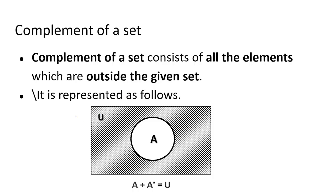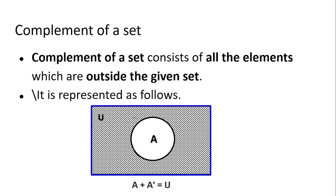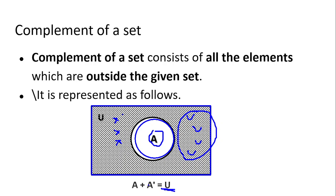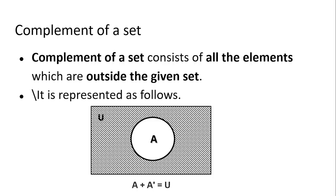Now suppose we have a situation where we have the universal set consisting of everything, and we also have the elements of a given set, but we are not interested in any of those elements — we want all the elements outside the given set. That is the complement of the given set. We shade the outside of the circle to indicate we are interested in elements outside the given set. The given set and all elements outside it together form the universal set, so A OR A-complement gives the entire universal set.